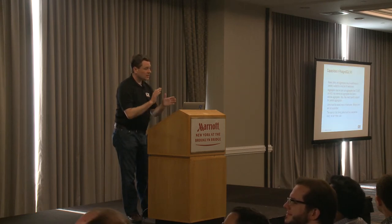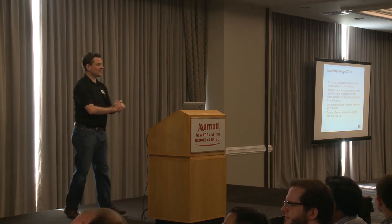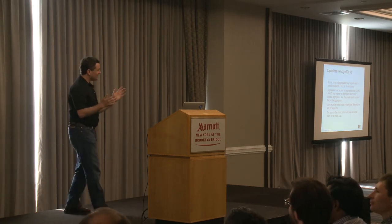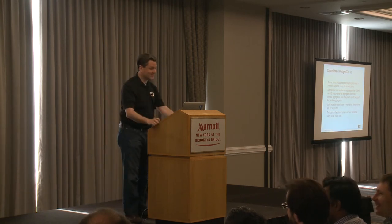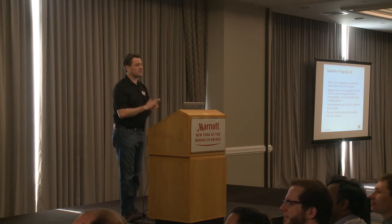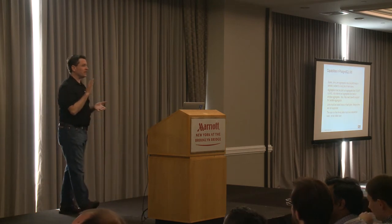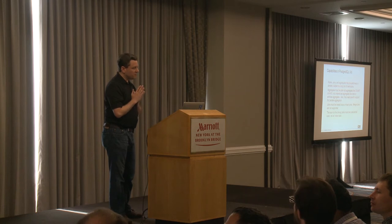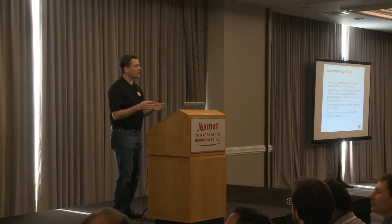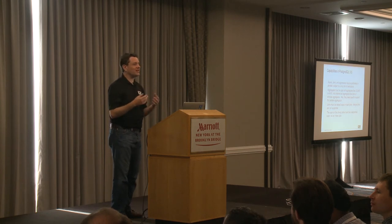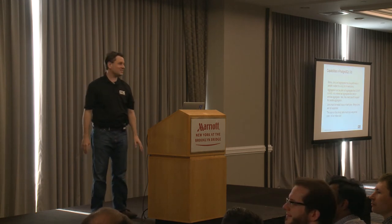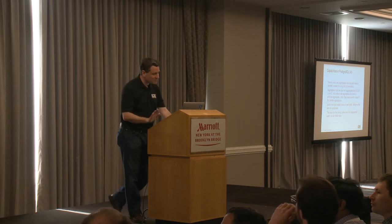So what can we actually do in PostgreSQL 9.6? Scans, joins, and aggregates can be done in parallel in 9.6, subject to a long list of restrictions. For aggregates, it needs to be a plain old-style aggregate — like what you learned in the 80s. Ordered-set aggregates like RANK and window aggregates with OVER PARTITION BY don't work with this. Maybe they will someday, but today they don't. It needs to be a plain old aggregate.